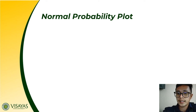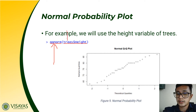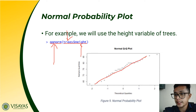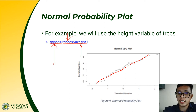To construct a normal probability plot, we use the qqnorm function with the dataset and variable. For example, we use the height variable of the trees dataset. There should be a straight line to indicate which values deviate from a normal distribution. Data points very far from the straight line are not taken from a normal distribution. This is what we call the normal probability plot.